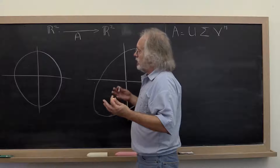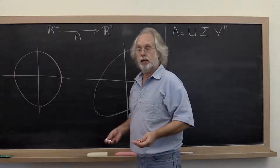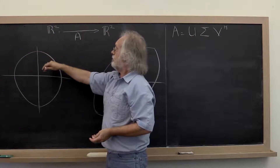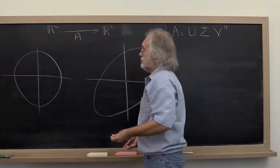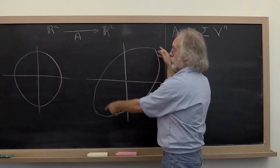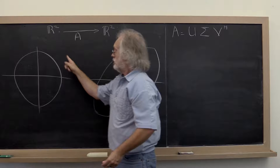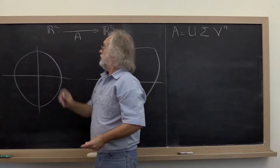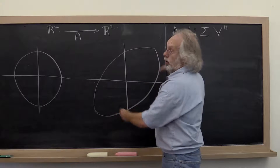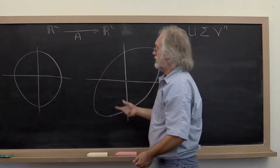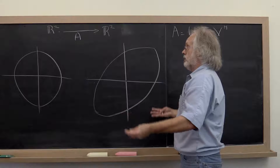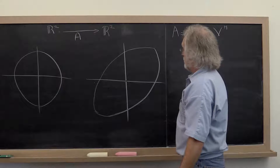We've already talked a lot about the unit ball. This here is the unit ball. How A transforms vectors can be completely described by looking at how vectors of unit length are transformed. Typically, if you look at the image of the unit ball, it looks elongated. That comes from the fact that matrix-vector multiplication preserves the linear combination.